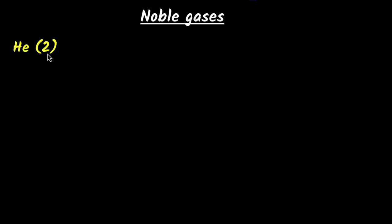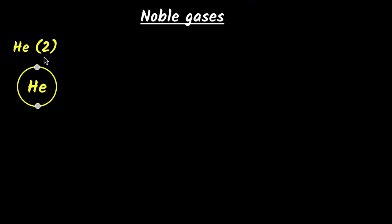If you take helium, we know that it has two electrons in it, but how are they arranged inside the atom? It turns out that the two electrons of helium are in the first shell, which we call the K-shell.